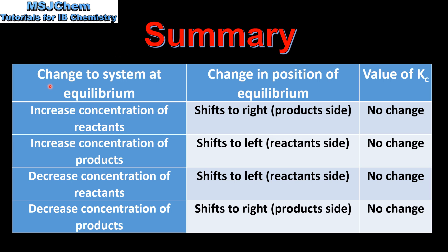Let's finish with a summary. We have the change to the system at equilibrium, the change in the position of equilibrium, and the change in the value of Kc. If we increase the concentration of reactants, the equilibrium shifts to the right. If we increase the concentration of products, the equilibrium shifts to the left. If we decrease the concentration of reactants, the equilibrium shifts to the left, and if we decrease the concentration of products, the equilibrium shifts to the right. All of these changes have no effect on the value of Kc.